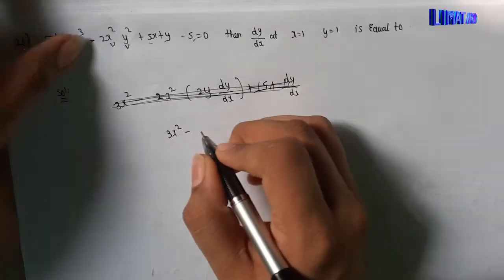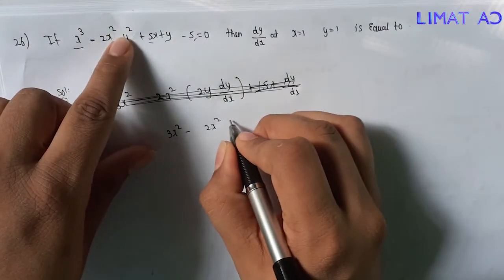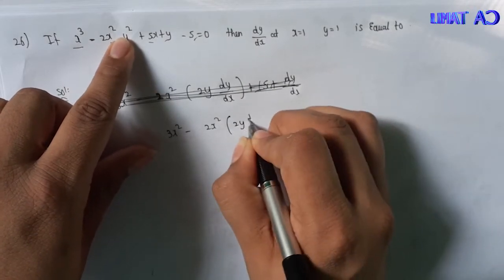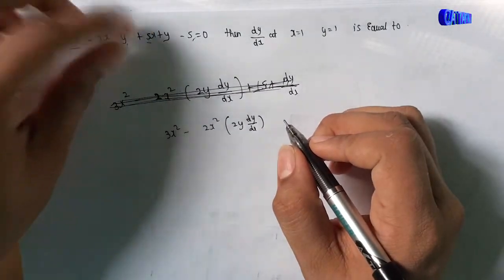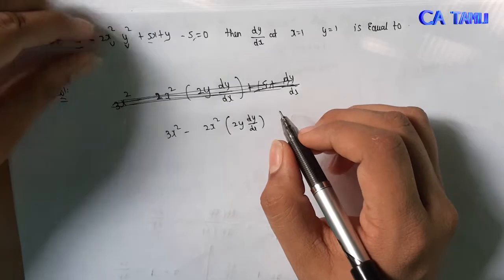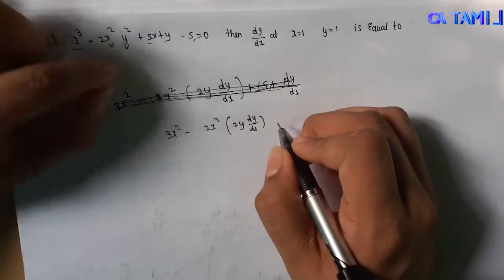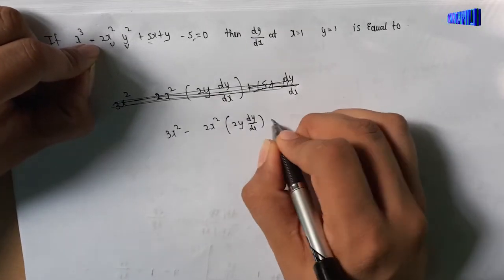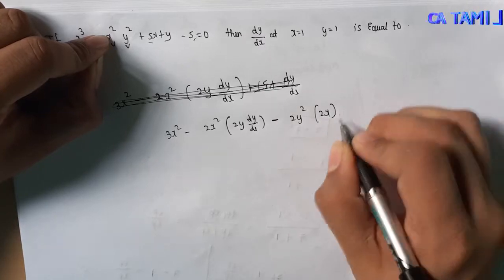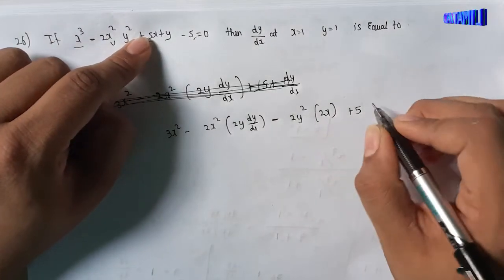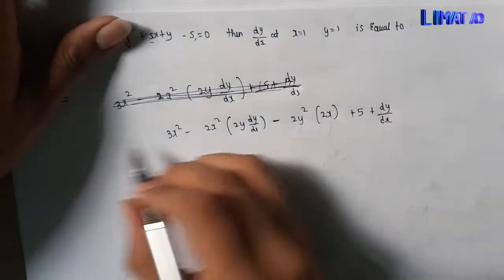So dy/dx: first, 3x² minus. First u is 2x². So u is 2x². We differentiate: 2y dy/dx. y is 2y. Next u is 2y. And if we differentiate u, we get plus into minus. Then we add 2y² and differentiate 2x. The remaining is 5x, then we differentiate to get dy/dx. The constant is 0.